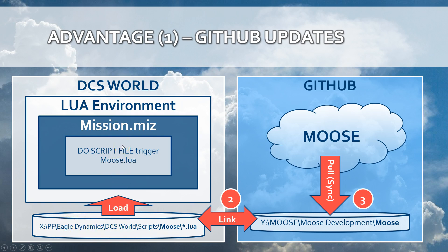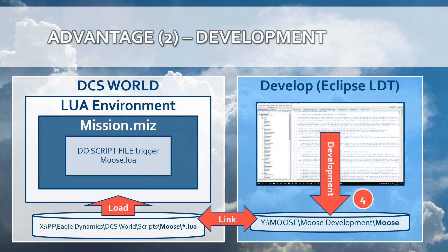Everything can be synchronized and done automatically. The second advantage is that when you are developing or extending the MOOSE Framework, or doing any other development in the Eclipse LDT, your changes will be saved on your local disk and because of the link, these changes will be automatically populated and loaded into your mission. These two advantages are very significant. Now I'm going to explain how to use this and how to set this up.